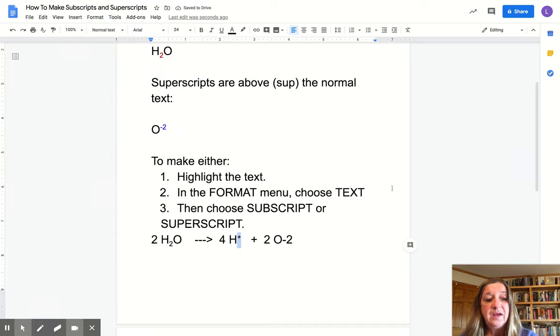And you can see that it gets smaller and goes back up to the top. And that is how you make subscripts and superscripts when you're typing in a Google Doc or Google Slide.